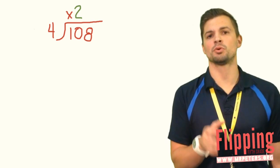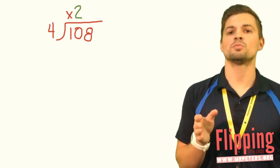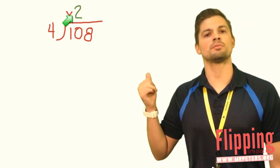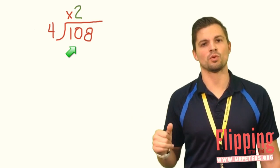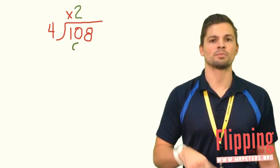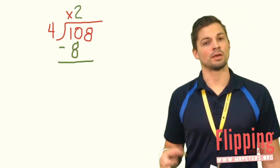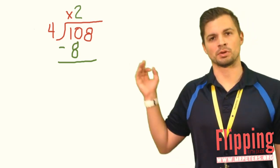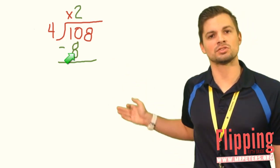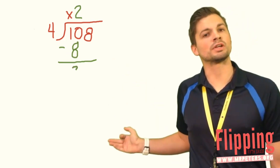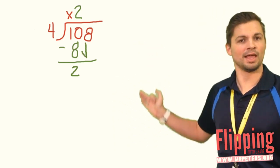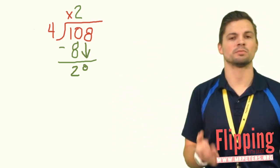Then you must multiply. So 2 times 4 will give me 8. I'll drop down that 8 below the 10. Then we subtract. 10 minus 8 is 2. Then we must bring down. We'll bring down that 8, so now that 2 becomes a 28.